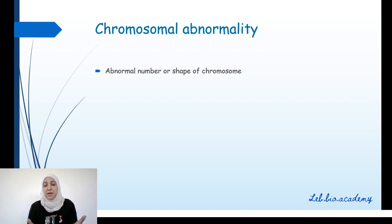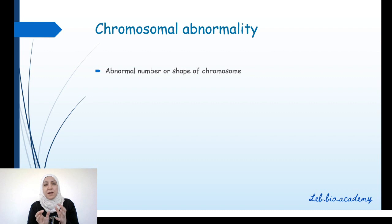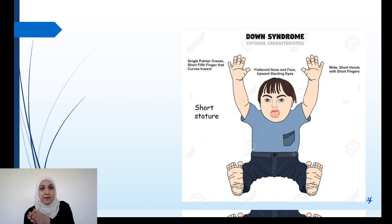If you look at a human karyotype and find out that the number is different from 46 chromosomes, we are talking about chromosomal abnormality. If you find out that a part of a chromosome is missing or added, that is also a chromosomal abnormality. Now let's look at an example.